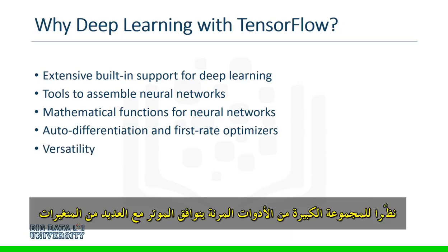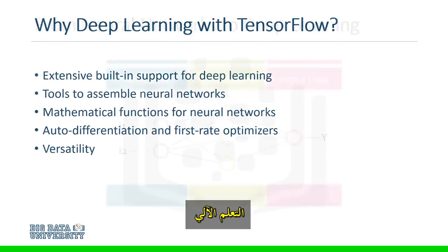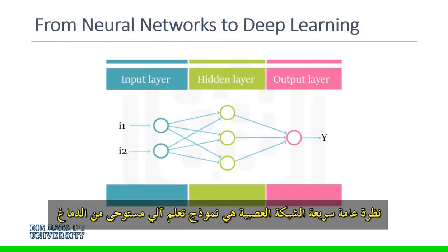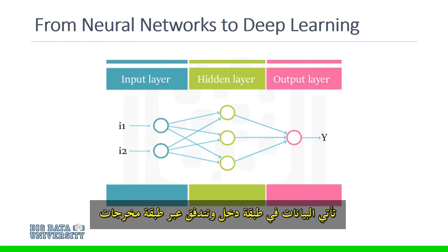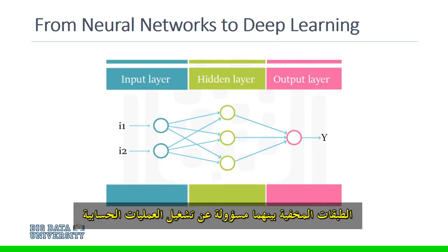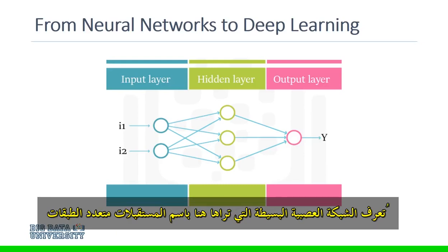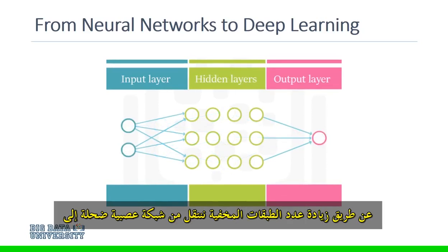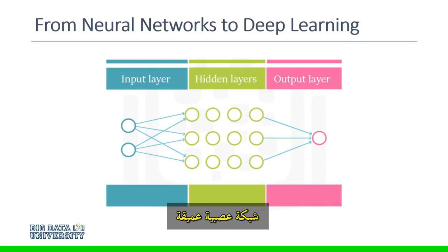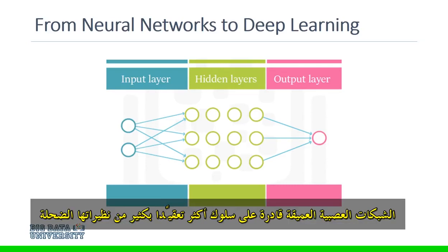Due to the large collection of flexible tools, TensorFlow is compatible with many variants of machine learning. As a quick overview, a neural network is a machine learning model inspired by the brain. Data comes into an input layer and flows across to an output layer. The hidden layers in between are responsible for running calculations. The simple neural network you see here is known as a multi-layer perceptron. By increasing the number of hidden layers, we move from a shallow neural network to a deep neural network. Deep neural networks are capable of significantly more complex behavior than their shallow counterparts.